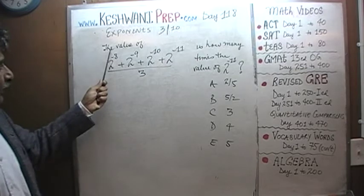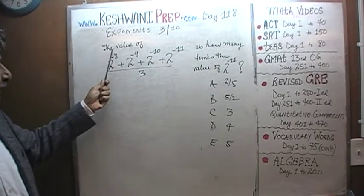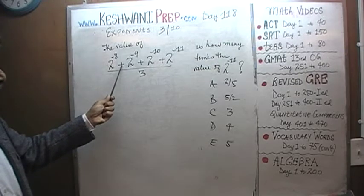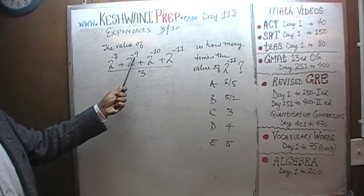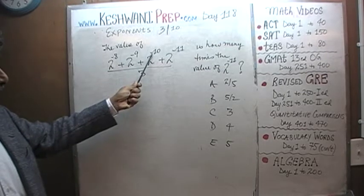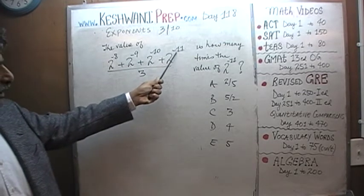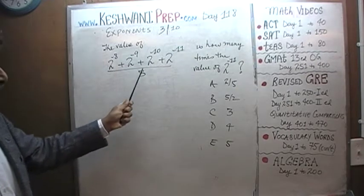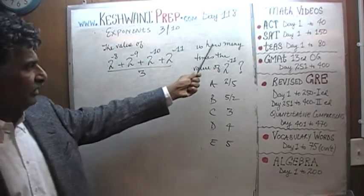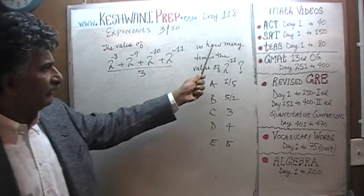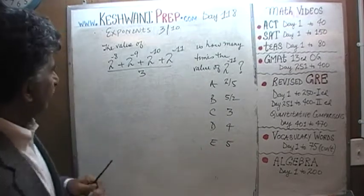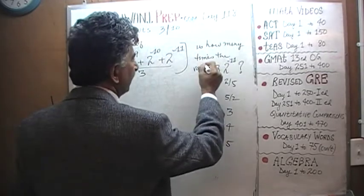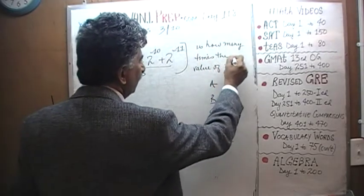Here is the problem. We are being asked the value of 2 raised to negative 8, plus 2 raised to negative 9, plus 2 raised to negative 10, plus 2 raised to negative 11, this whole quantity divided by 3. We are being asked: this quantity is how many times the value of 2 raised to 11?